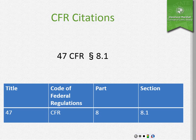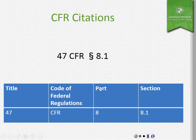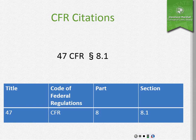Here's what a CFR citation looks like. The first number is the title; CFR stands for Code of Federal Regulations. The second number is the section, but the first number within the section is the part. This is important for a researcher because sometimes someone will have a citation such as 47 CFR 8 — that's not a pinpoint cite, that's just a cite to the part, which could have a large number of sections within it. So if you're looking for just one CFR section, it must have a decimal point in it.